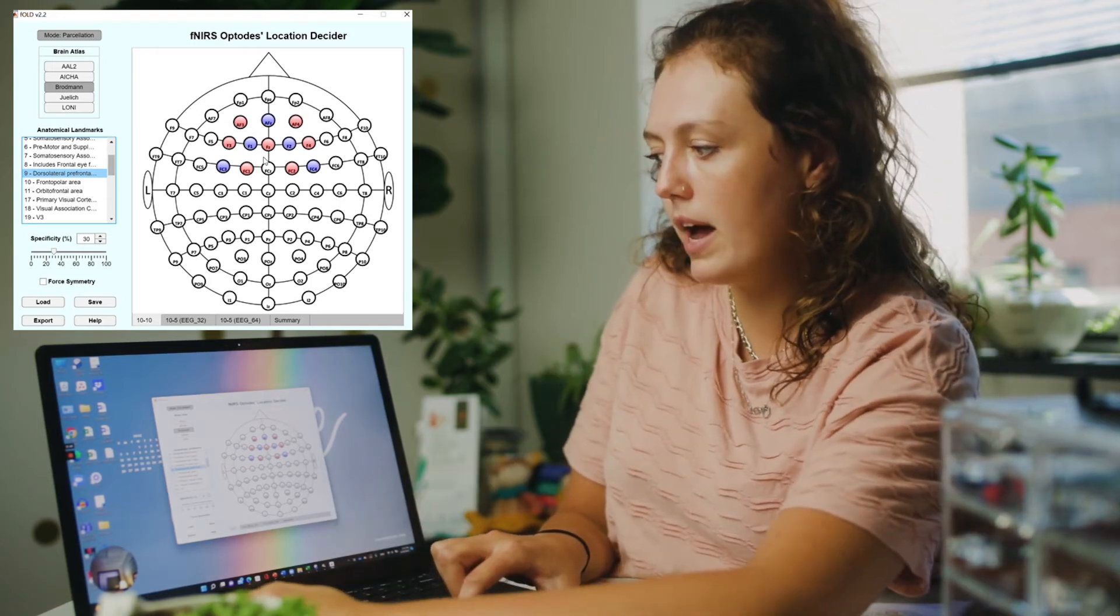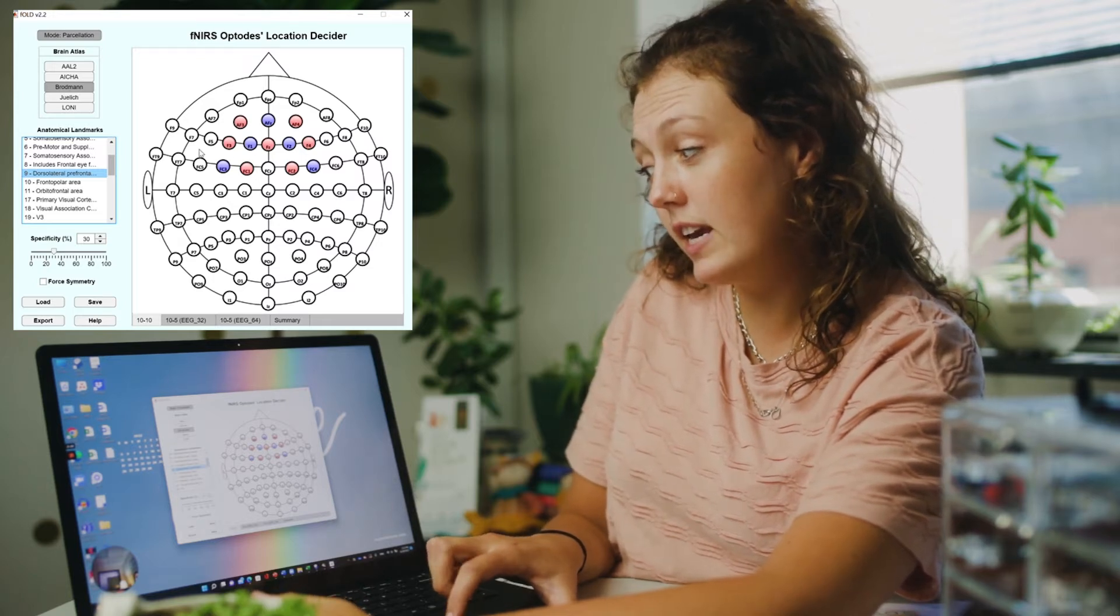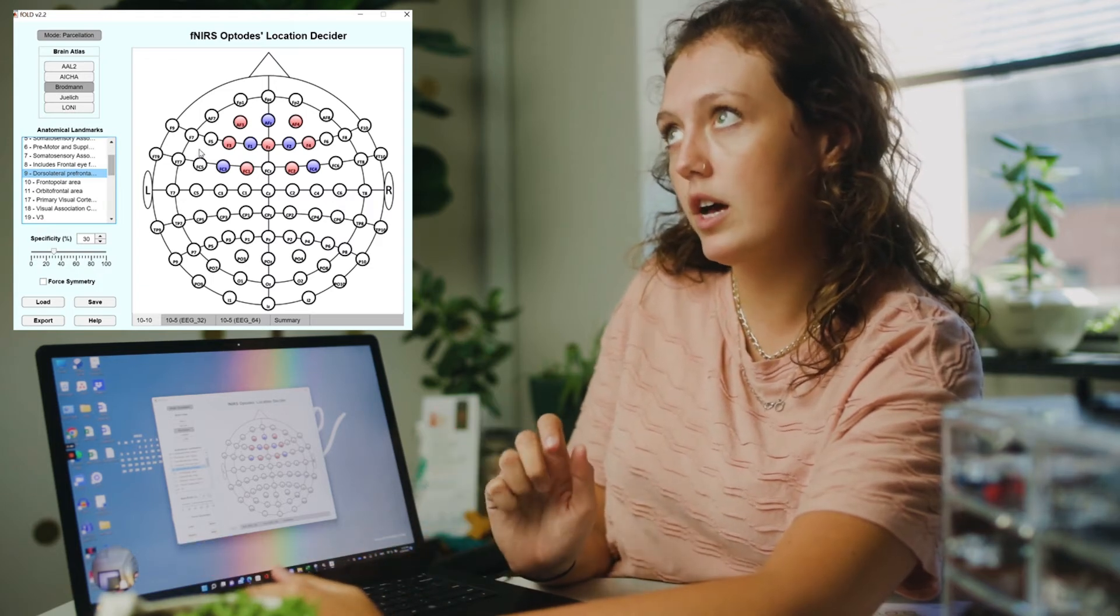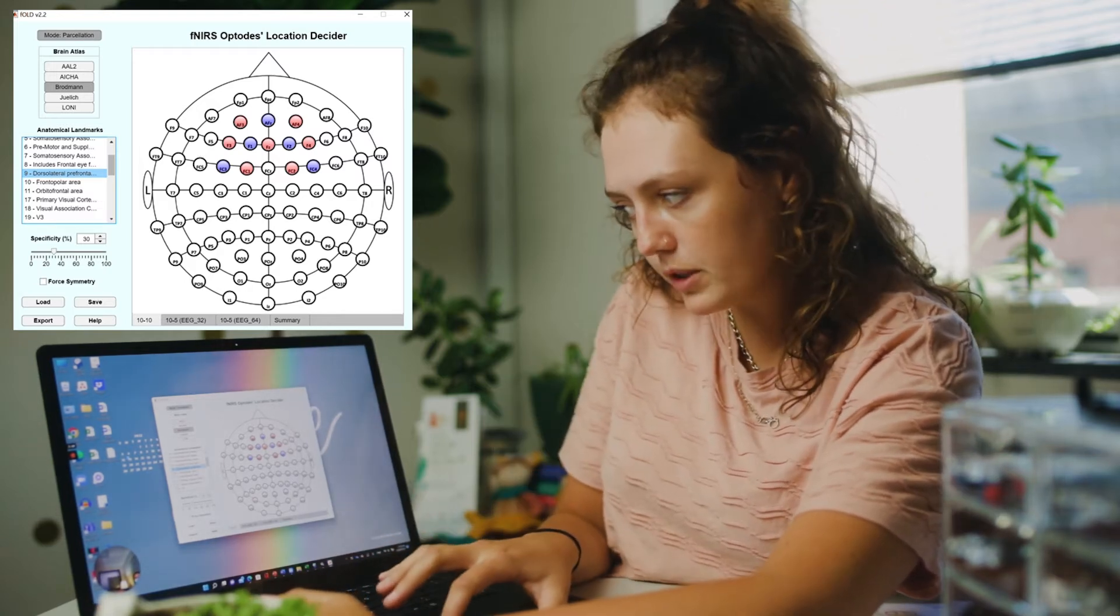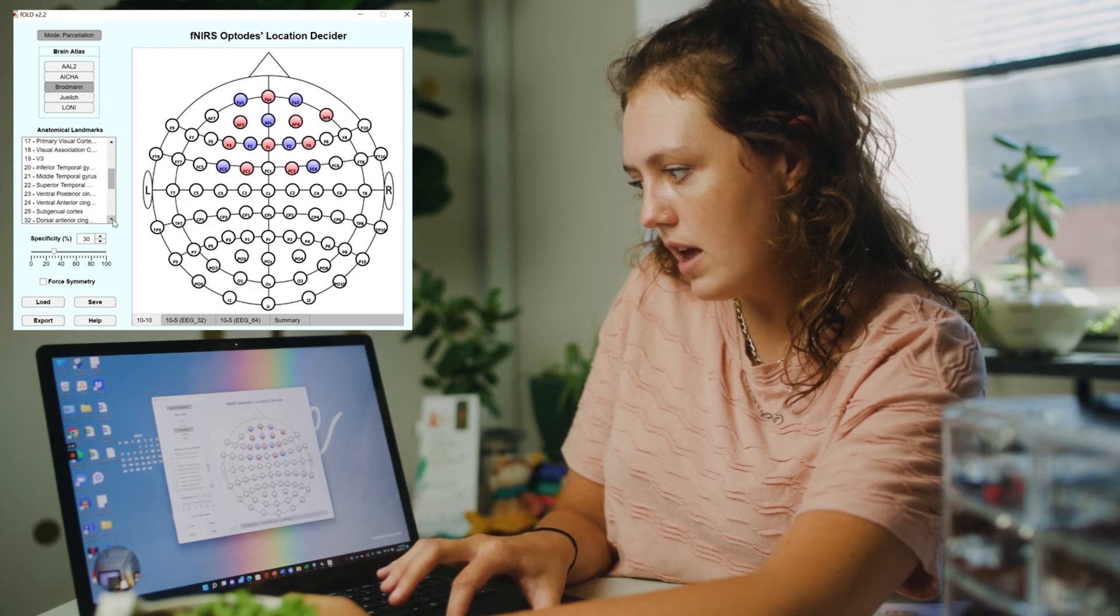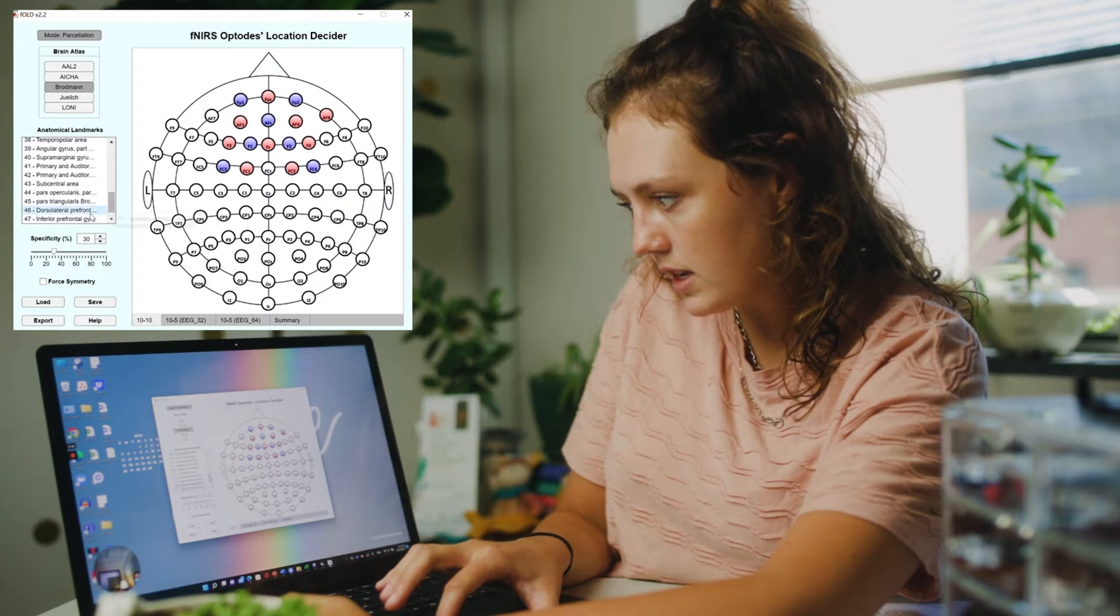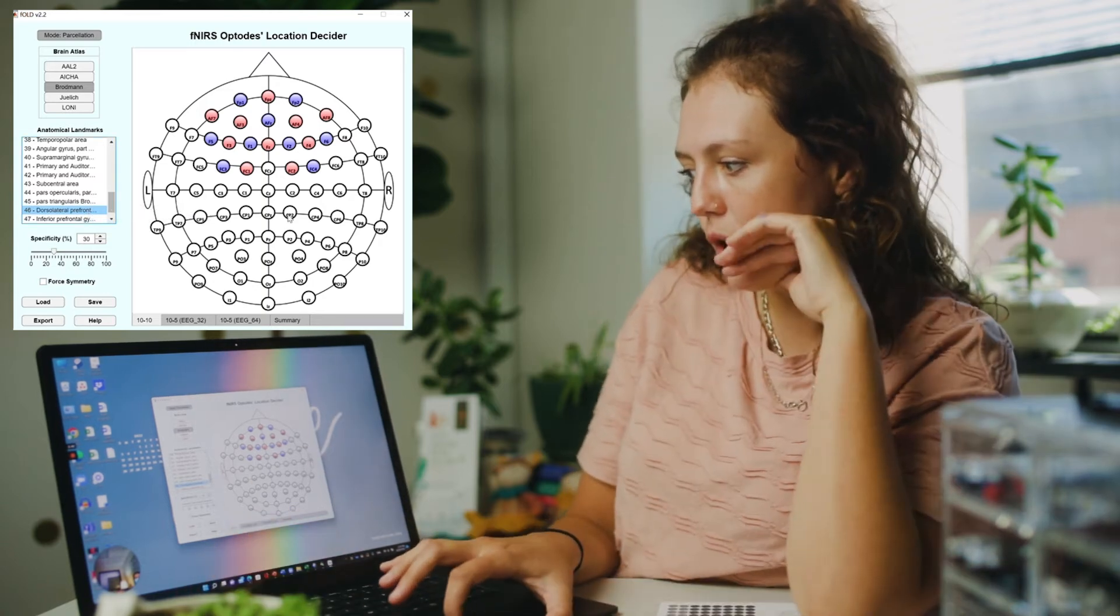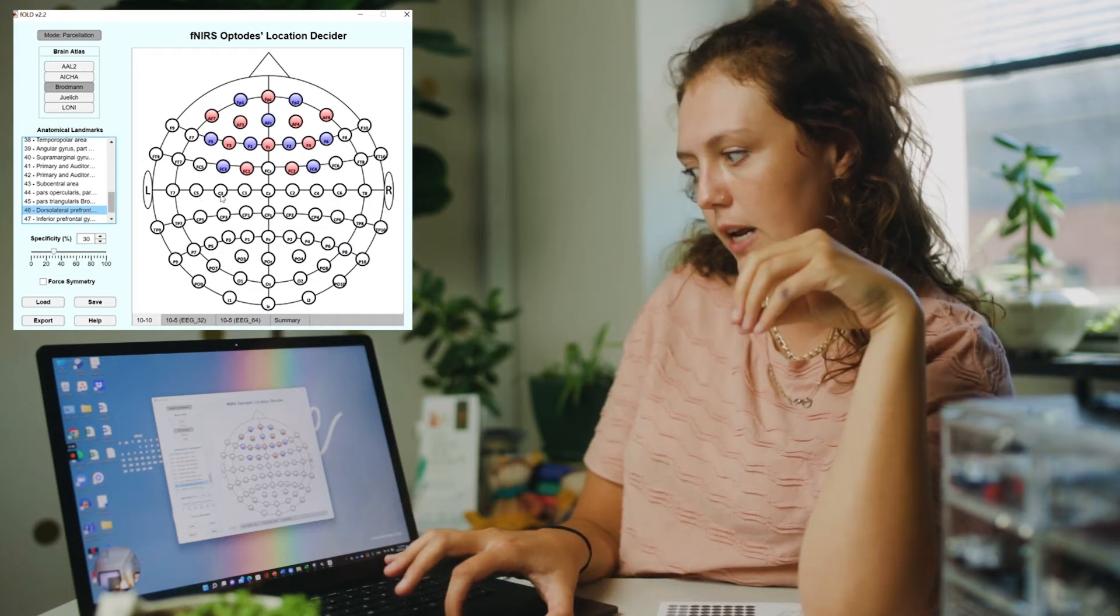I'm going to click all of my regions of interest first, and then we'll talk about the specificity and how you can change the arrangement based on the number of sources and detectors that you have on your FNIRS fibers. So I'm going to choose the frontal polar area, and then I'm going to go down to area 46 on the Brodman's area because I'm interested in this dorsolateral prefrontal cortex.